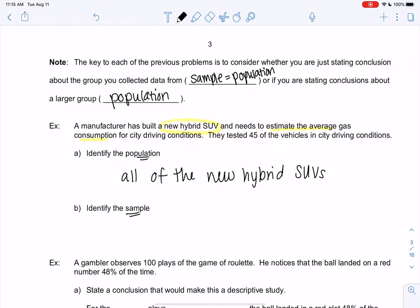Whereas the sample is only the ones we tested. So that would be the 45 tested SUVs. So hopefully we're seeing the difference, right? Populations are big groups and samples are smaller groups. Almost like fractions, right? A sample is a part and a population is the whole.